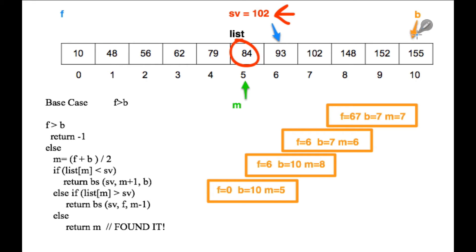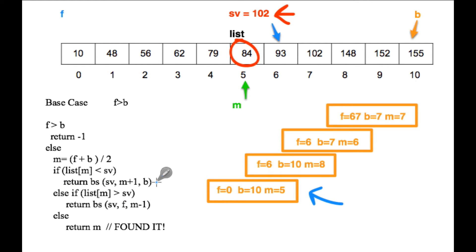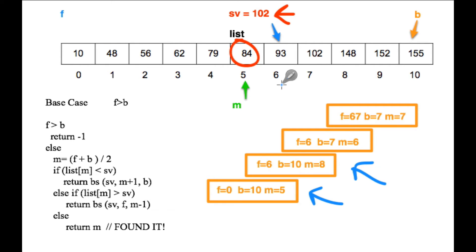The second recursive call has front=6 and back=10. Since f is less than b, we drop in and recalculate m. m is now 6 plus 10 divided by 2, which equals 8. So that's our new value of m.